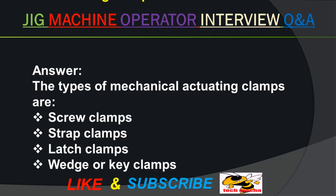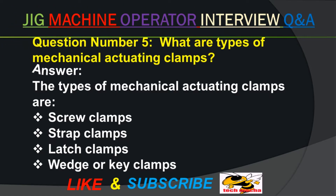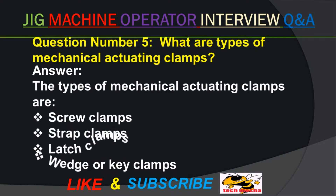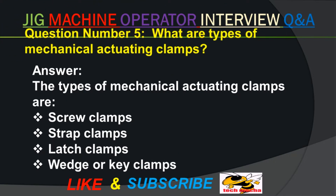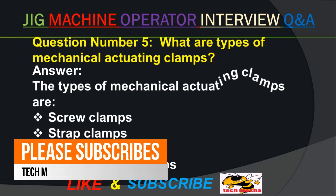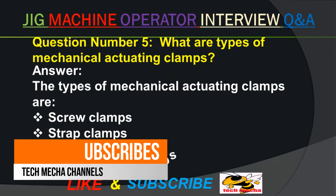Question number five. What are types of mechanical actuating clamps? Answer. The types of mechanical actuating clamps are: screw clamps, strap clamps, latch clamps, and wedge or key.